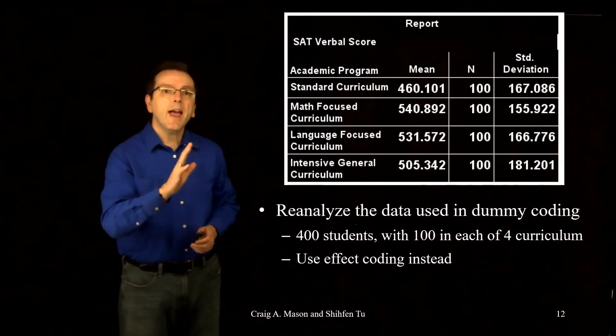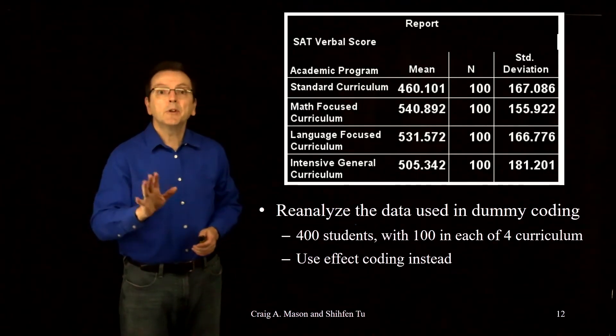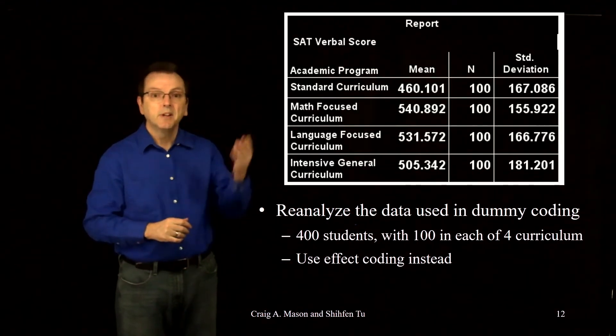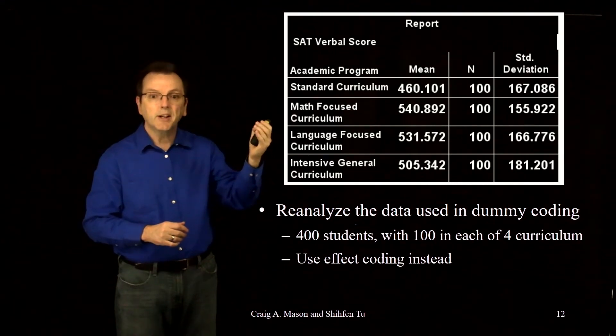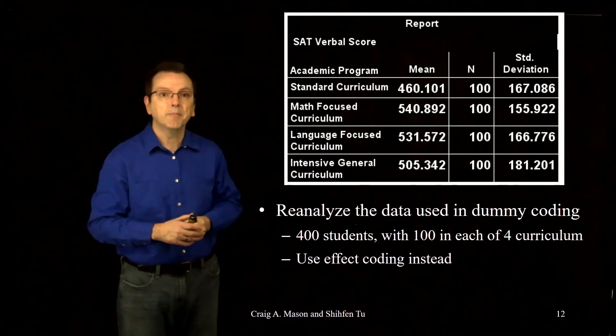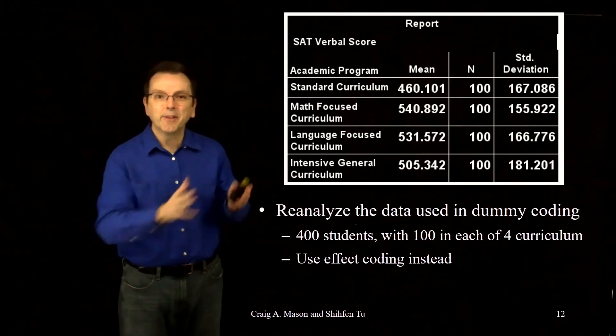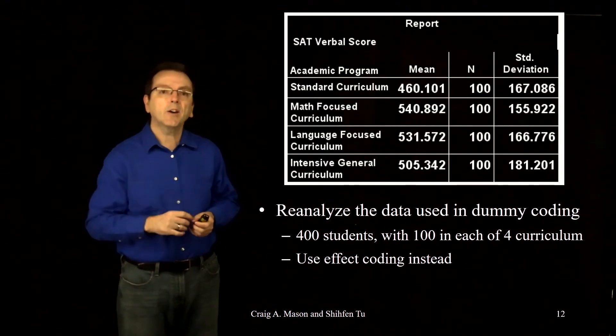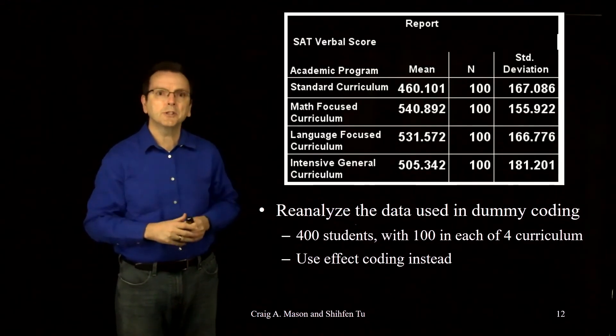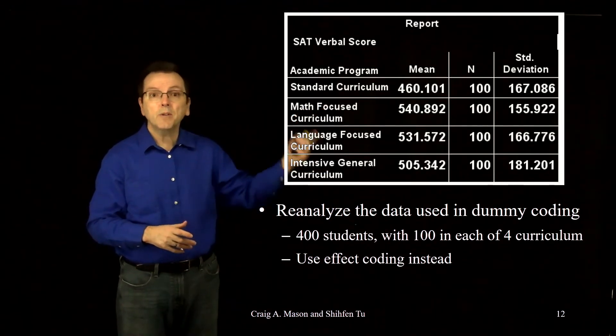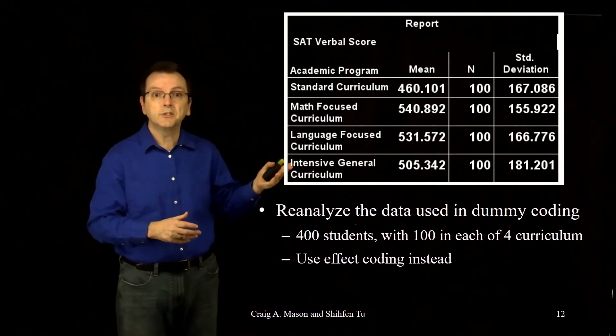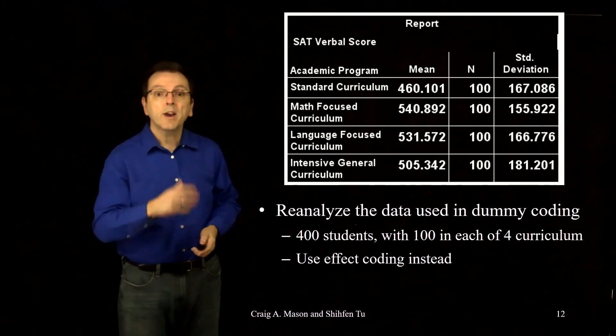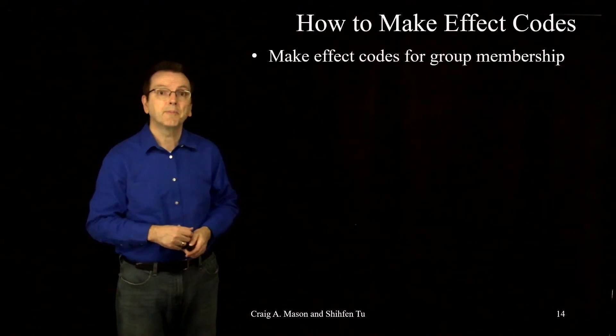Let's reanalyze the data from our dummy coding example in which we examined differences in verbal SAT scores based on four different academic programs. The standard curriculum, a math-focused curriculum, a language-focused curriculum, or an intensive curriculum. Yes, I know that with our standard curriculum group, this data looks ideal for dummy coding, but we'll use effect coding because I want to directly contrast the two approaches. We have a total of 400 students in four groups with 100 students in each group. And here we see the mean SAT scores for each of those four groups.